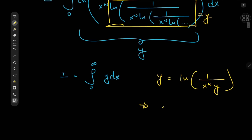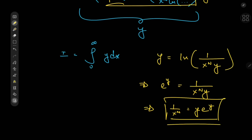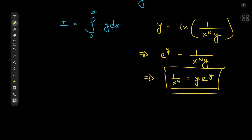This implies that e^y equals 1/x^n times y, and this implies that 1/x^n equals y times e^y, which is gonna make some people very happy. The reason for that happiness is gonna be the Lambert W function, which I haven't invoked many times, but it's not every day that I get to use it.